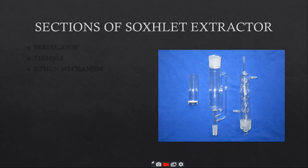What are the main sections of Soxhlet extractor? There are three main sections. Number one is percolator, also known as boiler and reflux, which circulates the solvent.